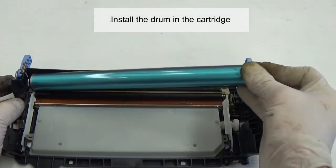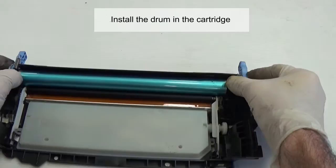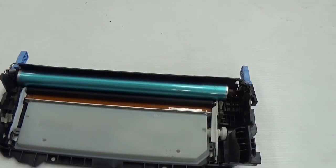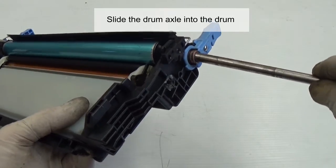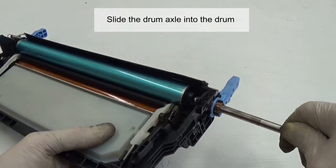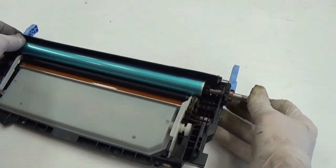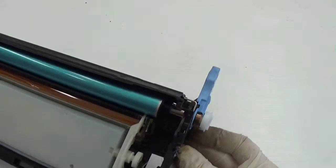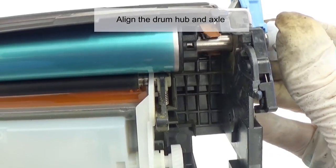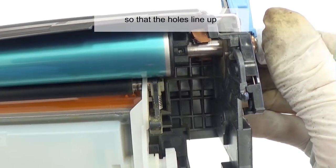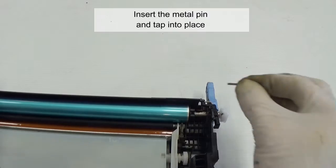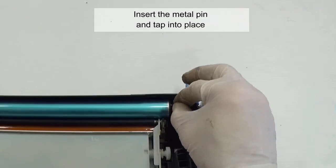Install the drum in the cartridge. Slide the drum axle into the drum. Align the drum hub and axle so that the holes line up. Insert the metal pin and tape it into place.